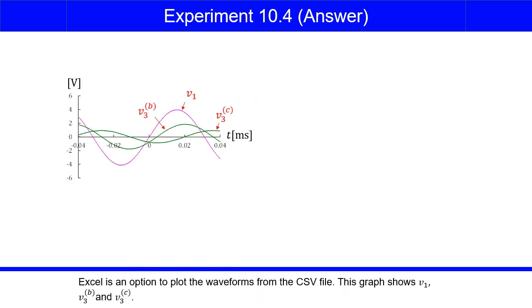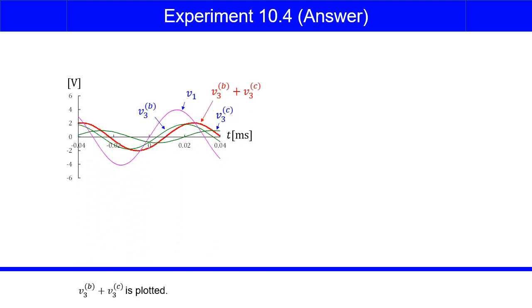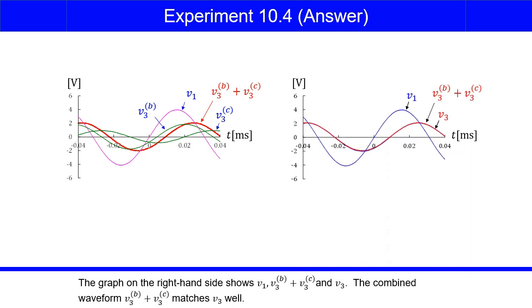Excel is an option to plot the waveforms from the CSV file. This graph shows V1, V3B, and V3C. V3B plus V3C is plotted. The graph on the right-hand side shows V1, V3B plus V3C, and V3. The combined waveform V3B plus V3C matches V3 well.